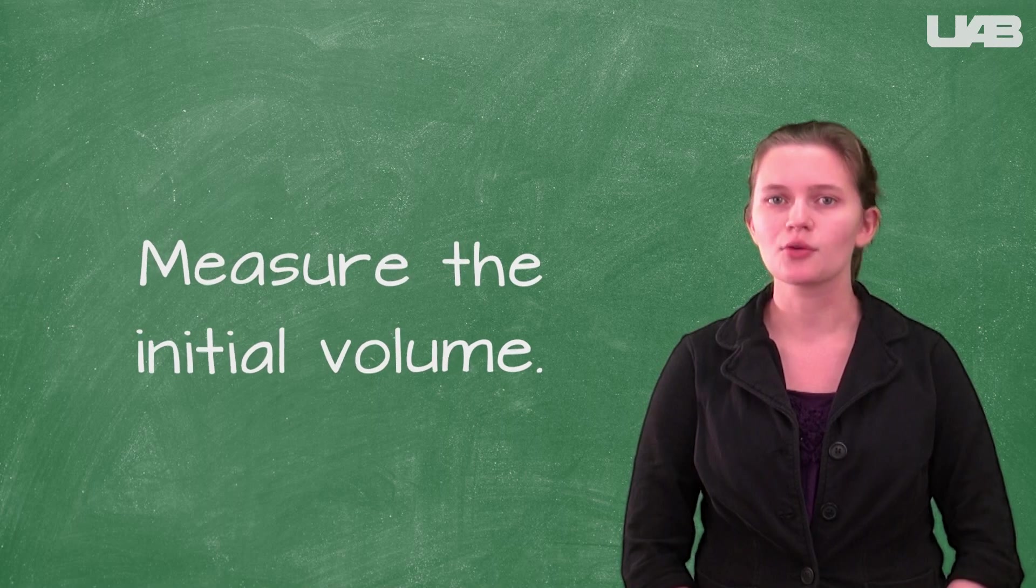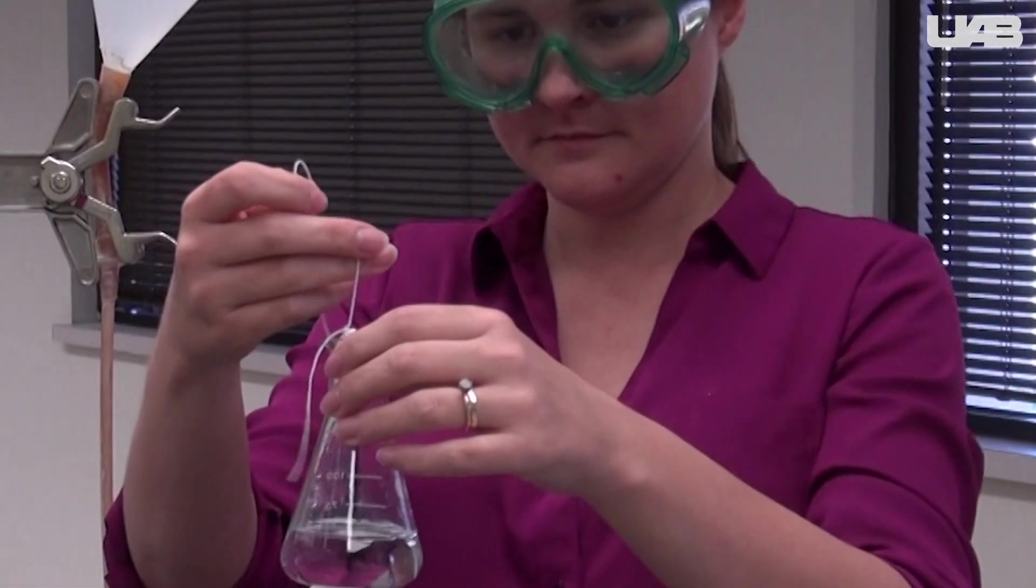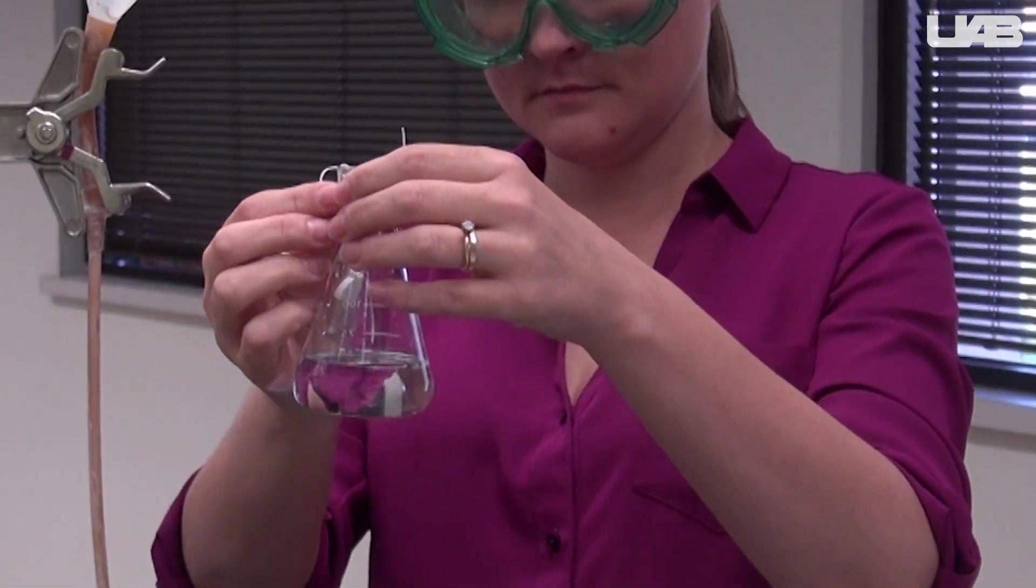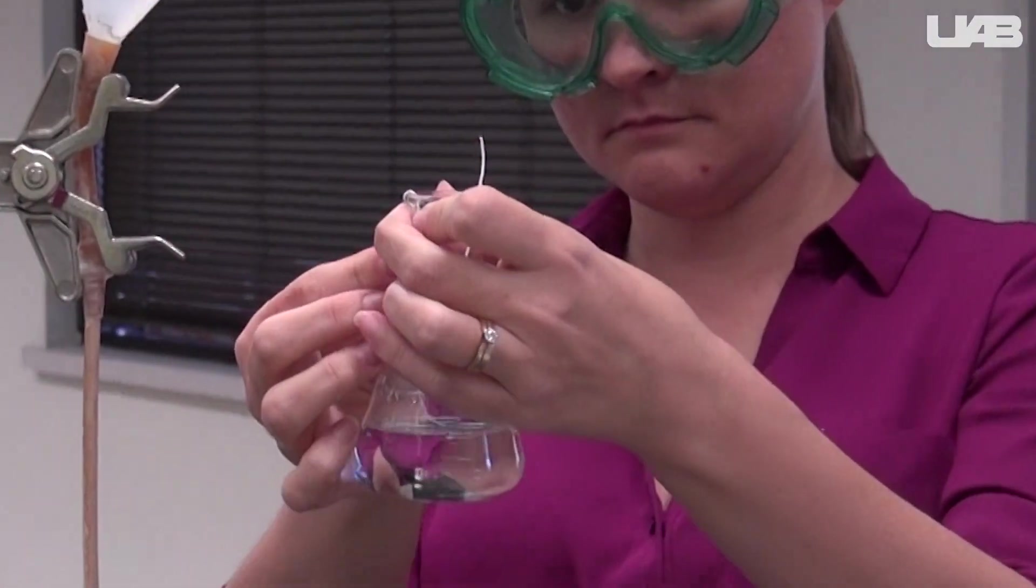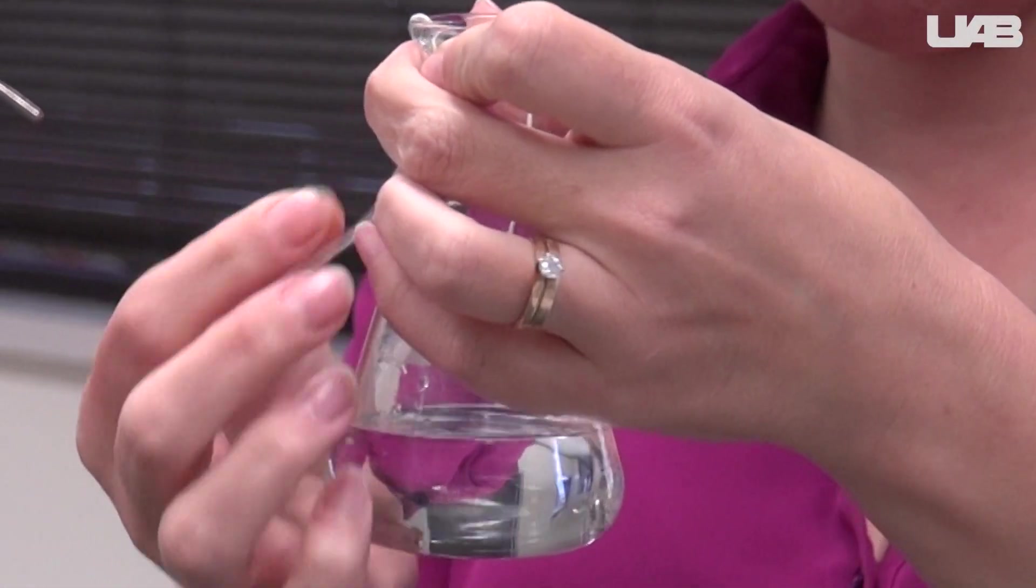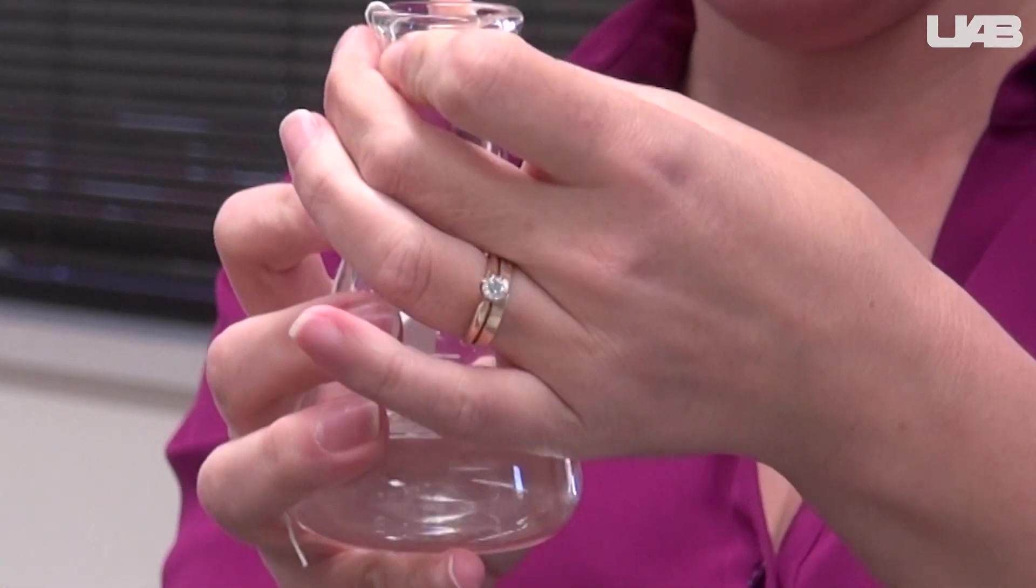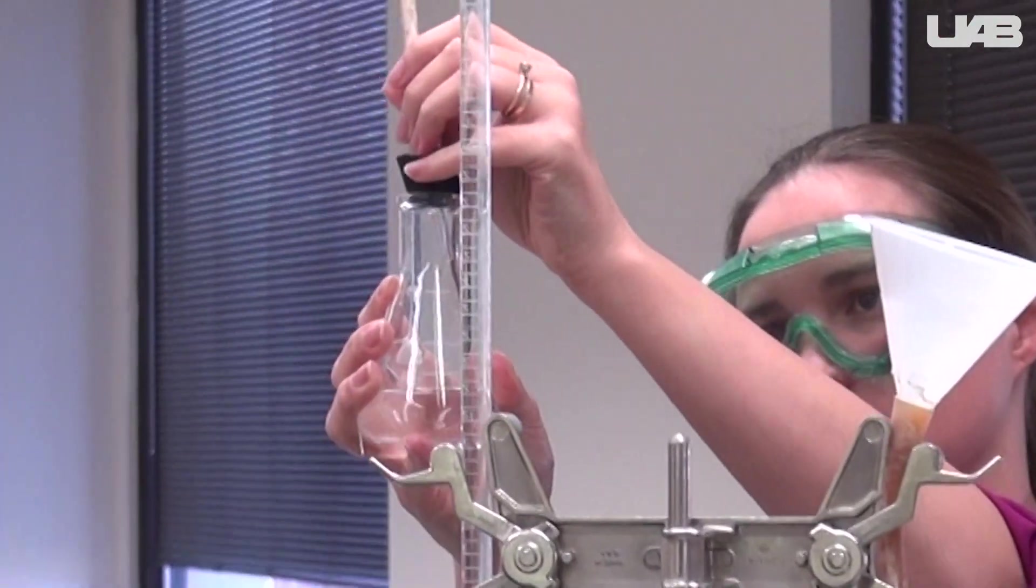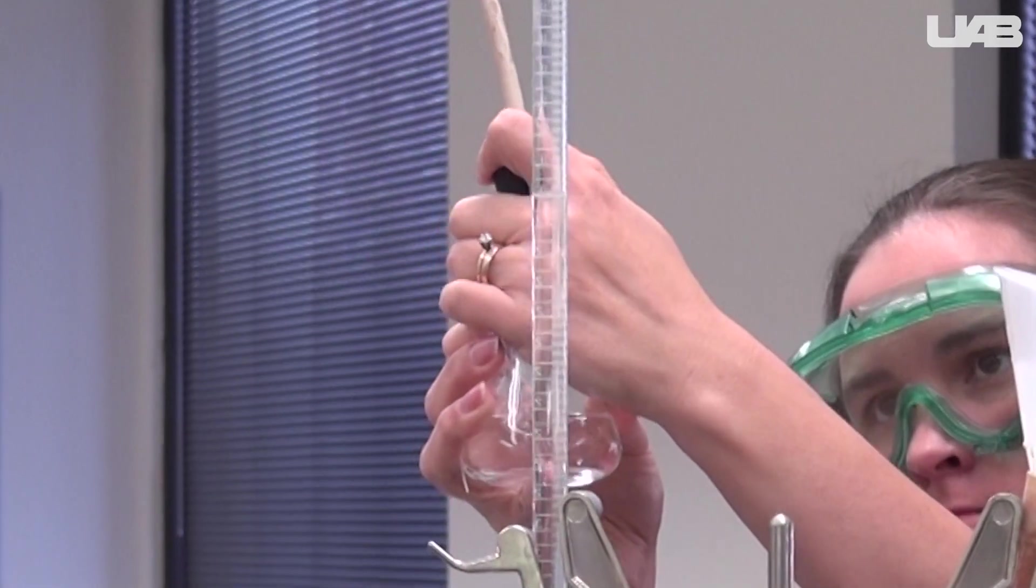Measure the initial volume of the water in the burette. One group member should hold the funnel now while another takes the bicarbonate tablet on the string and places it in the Erlenmeyer flask above the level of the acetic acid. Plug the mouth of the Erlenmeyer flask with the stopper tightly to hold the string in place.